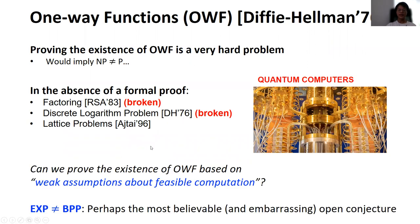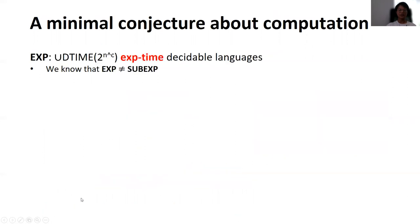So we really need to prove the existence of one-way functions. In this work, we ask: can we prove the existence of one-way functions based on very weak assumptions about feasible computation? Perhaps the most believable and embarrassingly open conjecture is that EXP is not equal to BPP. Let us look into this minimal conjecture.